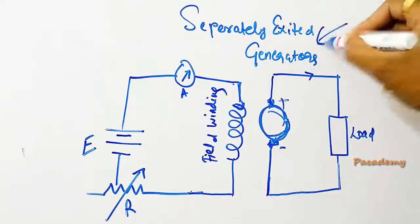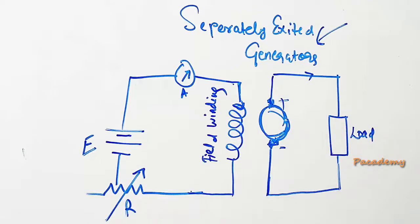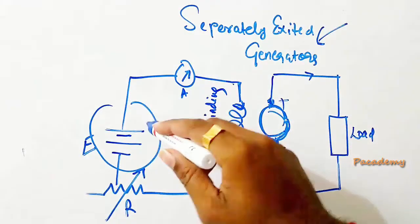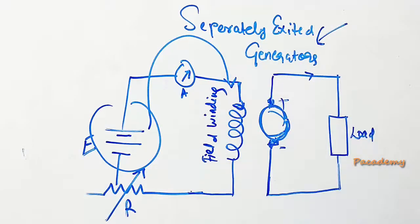Separately excited generator is a type of DC generator. Separately excited DC generators are those for which the field winding is supplied the EMF or required power from an external battery or external source.